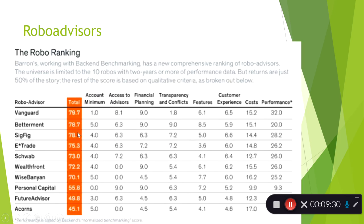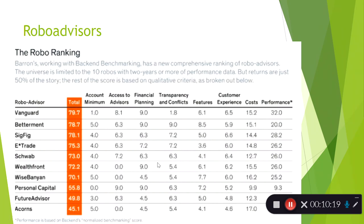Here's a report from Barron's about different robo advisors. This started with firms like Wealthfront and Betterment, but now regular commercial investment firms have been offering these services to clients. The highest-rated one was Vanguard, which had a relatively low account minimum and access to actual advisors if you wanted to talk to them. Fully online ones like Wealthfront had access to zero human advisors. This is from around 2018, so rankings may have changed — you can check Barron's reports each year.